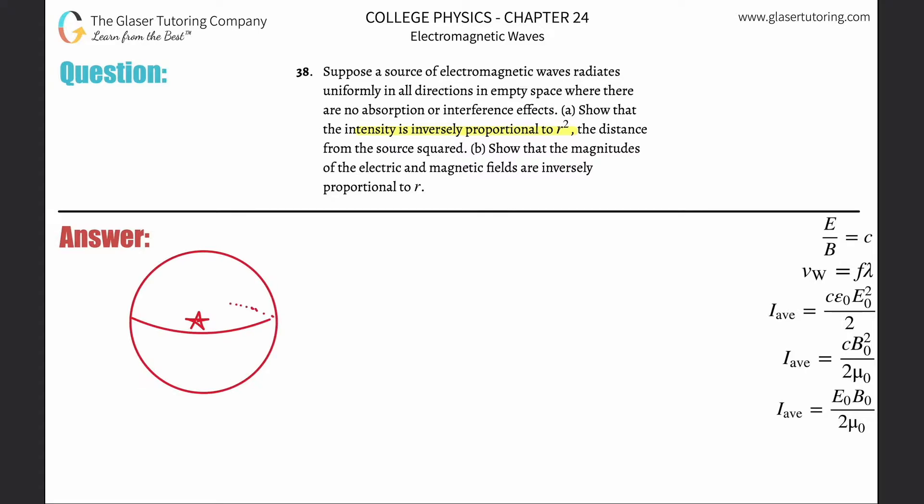So in order for us to show that the intensity is inversely proportional to r-squared, we first have to know the intensity formula. And that's simply going to be the power divided by the area.